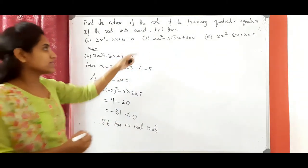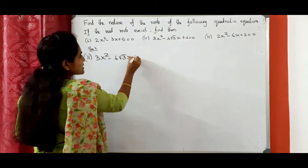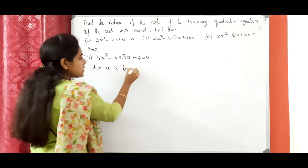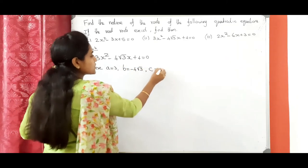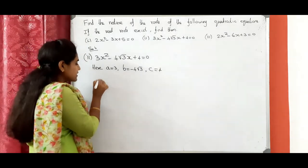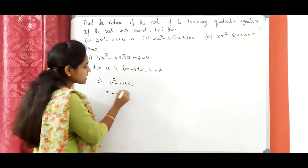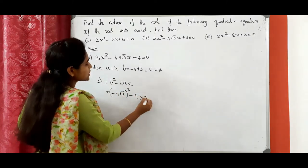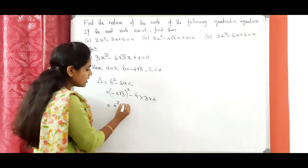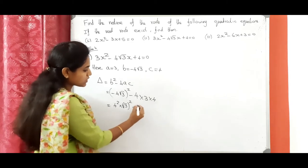Now we can solve the second problem: 3x squared minus 4 root 3 times x plus 4 equals 0. Here a equals 3, b equals minus 4 root 3, and c equals 4. We need to find the discriminant. Delta equals b squared minus 4ac, which equals minus 4 root 3 whole squared minus 4 into 3 into 4, giving 4 squared into root 3 squared minus 48, which equals 16 into 3, equal to 48.